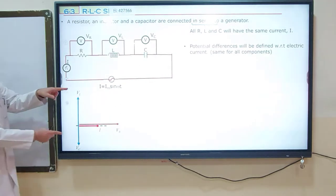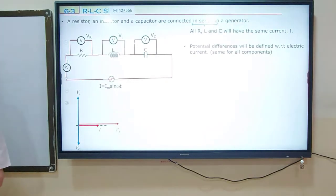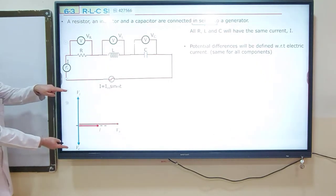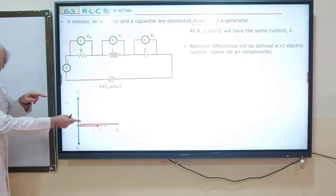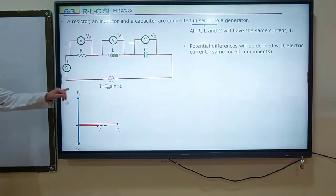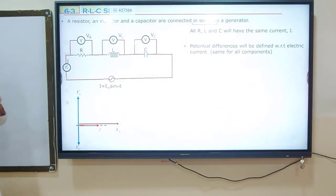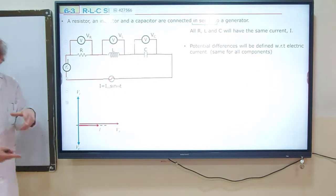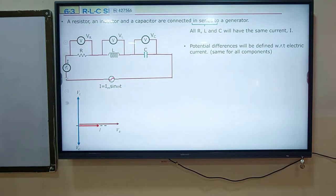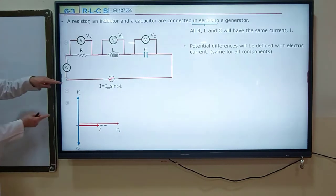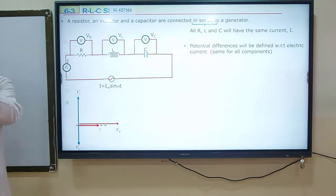VL and VC — are they in opposite directions? Yes. So the angle between two vectors in opposite directions is 180°. The phase angle difference between VL and VC is 180°. The phase angle difference between VL and VR is 90°. The phase angle difference between VR and VC is also 90°. Since VL and VC are opposite vectors, we subtract them to find their resultant.